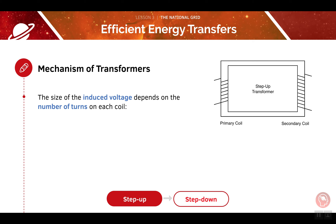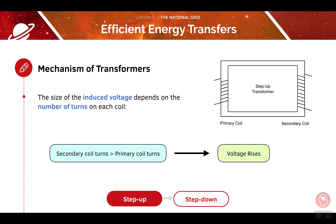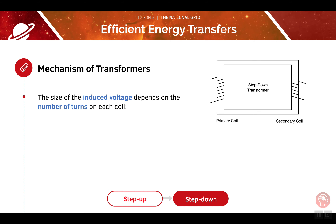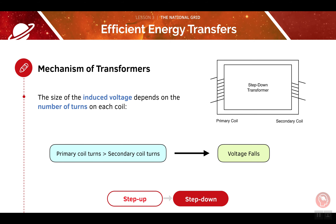The size of the induced voltage depends on the number of turns on each coil. If there are more turns on the secondary coil, then the voltage will rise — this is a step-up transformer. In a step-down transformer, the number of turns on the primary coil will be greater and the voltage will fall.